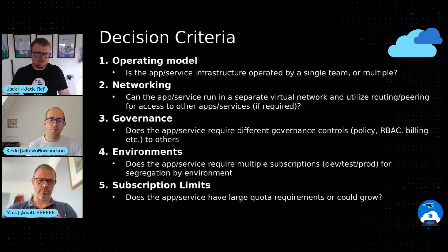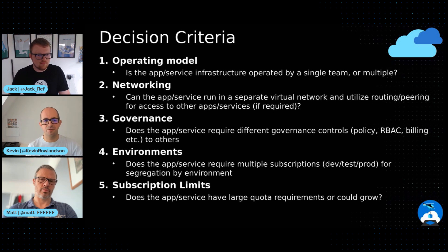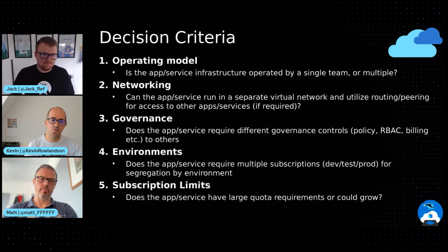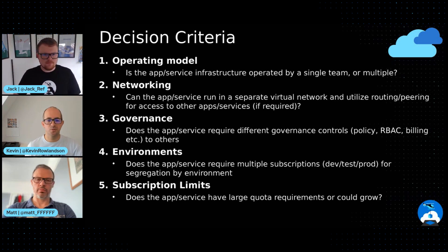Moving to broader topics, governance is another consideration — you're often looking at the differences between an online or a corp workload: something facing out to the internet versus something kept internal and private with hybrid connectivity back to on-premises. Those different governance models are a lot harder to implement at a granular level within a single subscription, so choosing multiple subscriptions lets you place workloads across different governance models.